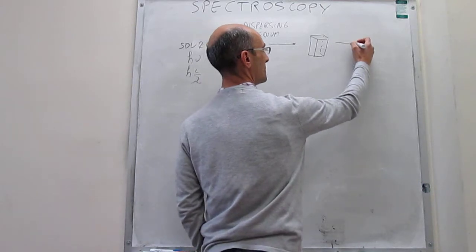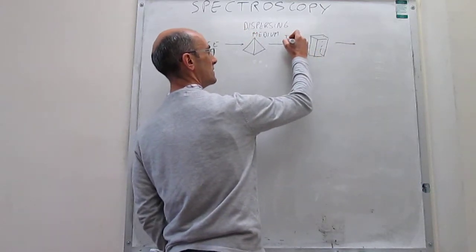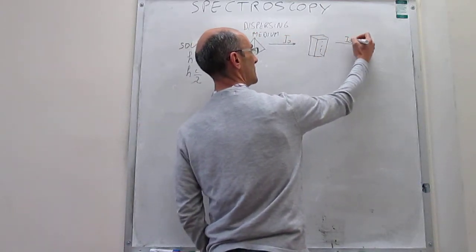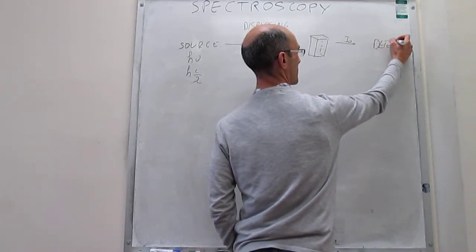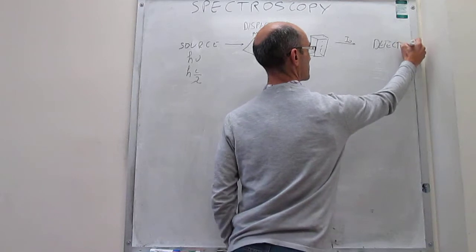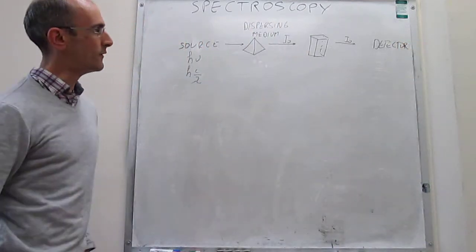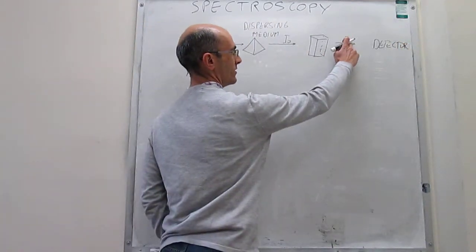And after that, this will be your I₀. This is your I. After that, you just arrive at the detector, which can measure the number of photons that have been transmitted.